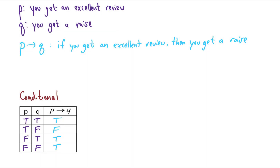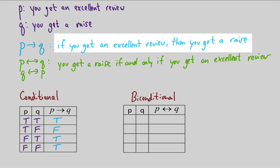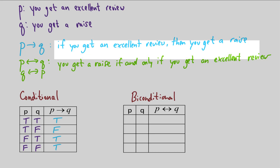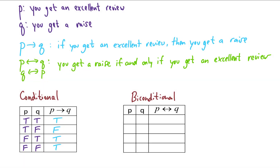Now let's look at the biconditional, or the if-and-only-if statement. 'p if and only if q' is the same as 'q if and only if p,' and we read this as: you get a raise if and only if you get an excellent review. In the previous conditional, we left open the possibility that you could get a raise some other way. However, with the biconditional, we don't leave that possibility open — the only way to get a raise is to get an excellent review, and vice versa. Let's create this basic biconditional truth table.